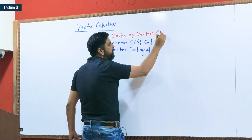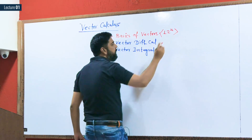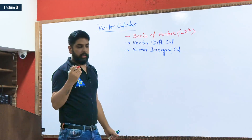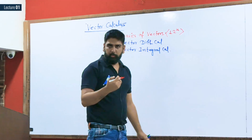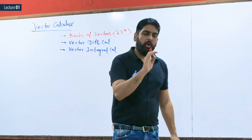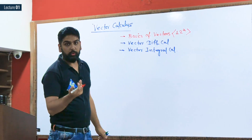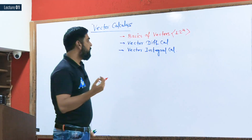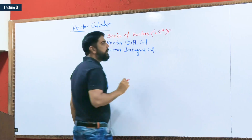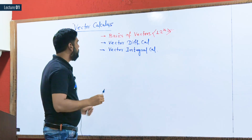The basics of vectors include what we have done before: magnitude, dot product, cross product, scalar triple product, determinant style, perpendicular vectors, orthonormal vectors, and orthogonal vectors. This is essentially what we covered in class 12.